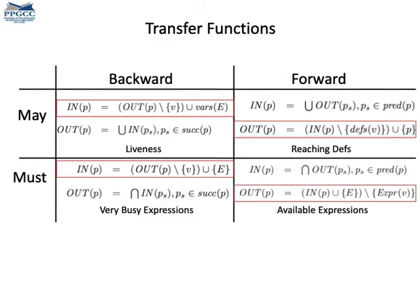Here they are. We have four transfer functions. In the case of liveness and very busy expressions, they build insets. In the case of reaching definitions and available expressions, they build outsets.